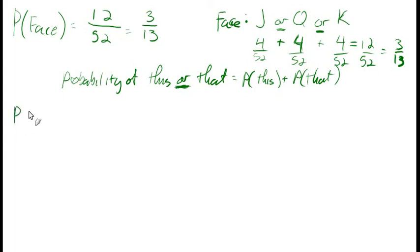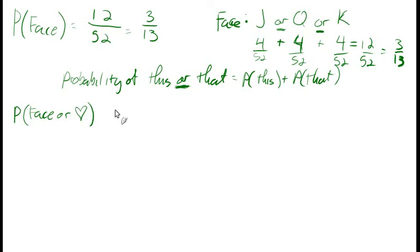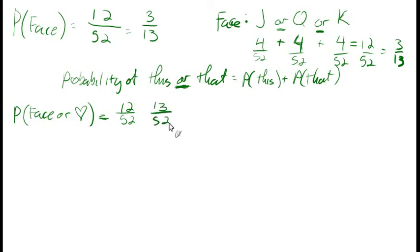Here's a little trick. Let's say we want the probability of a face card or a heart. Whether we get a face card or we get a heart, we're successful. So we say: probability of a face card plus probability of a heart. The probability of a face card is 12 out of 52. The probability of a heart is 13 out of 52. Adding those together gives 25 out of 52. They don't have any common factors, so that's 25 out of 52.